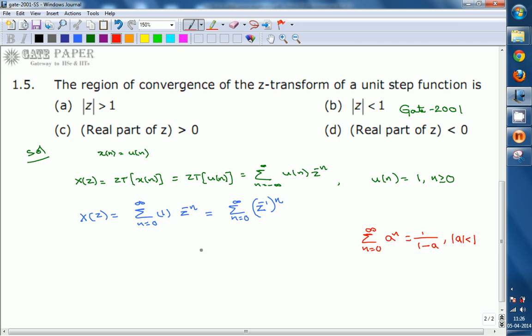Then we will get this as 1 by 1 minus Z power minus 1 for mod Z power minus 1 less than 1. Then it equals Z by Z minus 1, for 1 by mod Z less than 1. Then it becomes mod Z greater than 1.